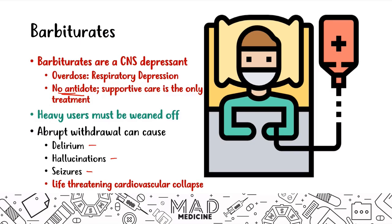For Step 1, a vignette might present a patient who appears very depressed in their autonomic and CNS function. They might be delirious, having seizures, or hallucinating if they just started withdrawing. Or if they took barbiturates with alcohol, they'll have a very depressed CNS — they won't be waking up and may go into respiratory depression.